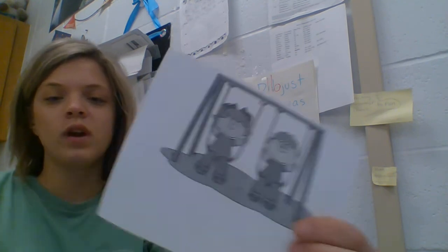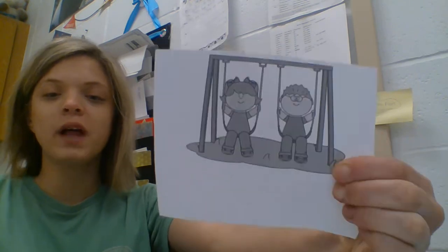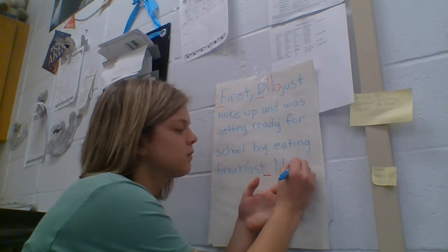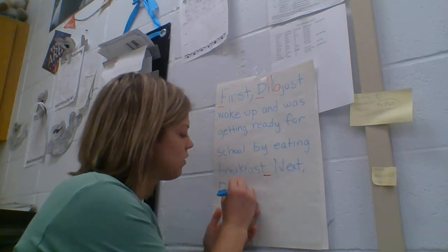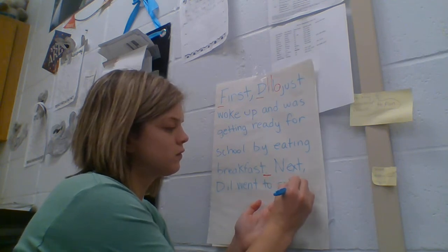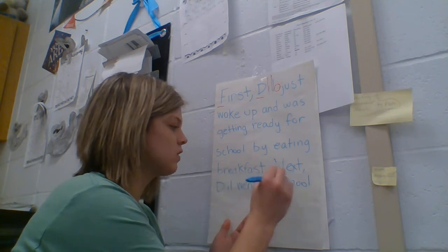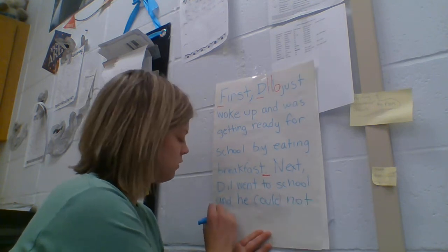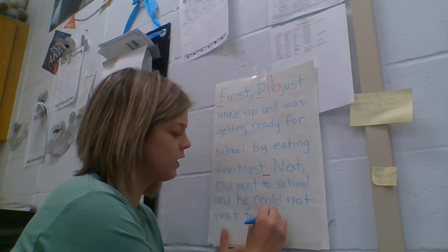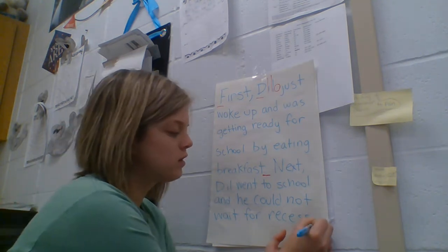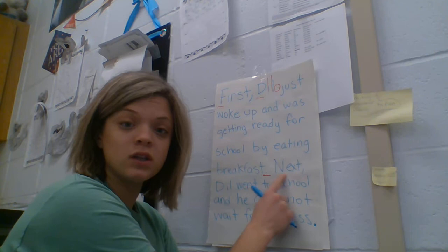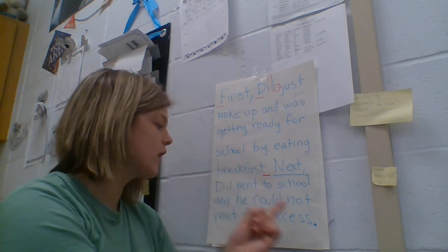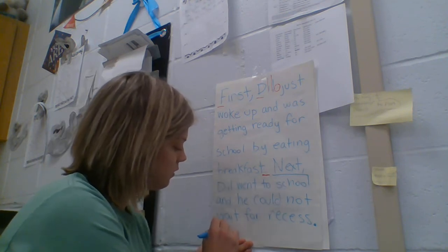So let's keep going. We have: First, Dill woke up and was getting ready for school by eating breakfast. Now, what do you think happens in the next picture? That's right — Dill is at school and he's playing on the playground. It's kind of like Dill's telling about his day. Next, Dill went to school and he could not wait for recess. Notice how we used a capital letter and a transition word — Next, comma. He played on the swings.